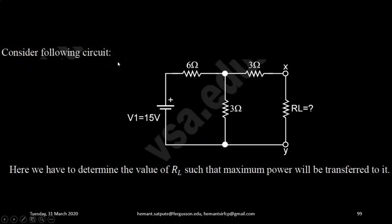Now, consider the following circuit. In this circuit, one voltage source V1 of 15V is connected across the combination of resistors 6 ohm, 3 ohm and 3 ohm.